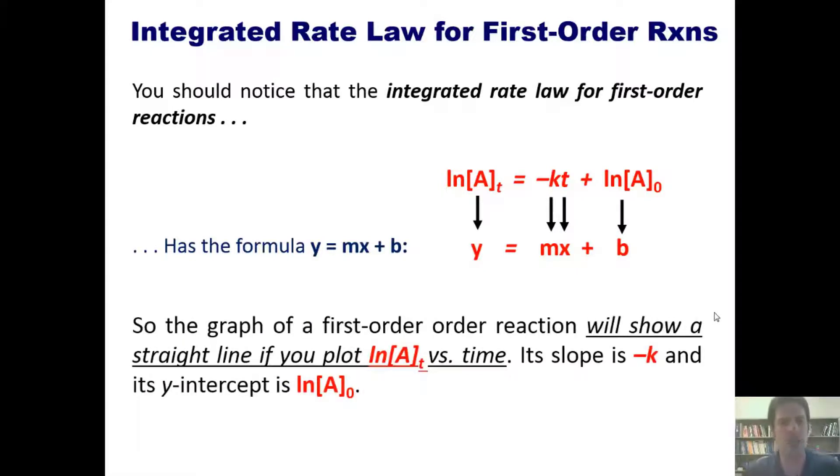So the graph of a first order reaction will show a straight line if you're plotting ln of A sub t versus time. Its slope is negative k, and its y-intercept is the ln of A sub 0.